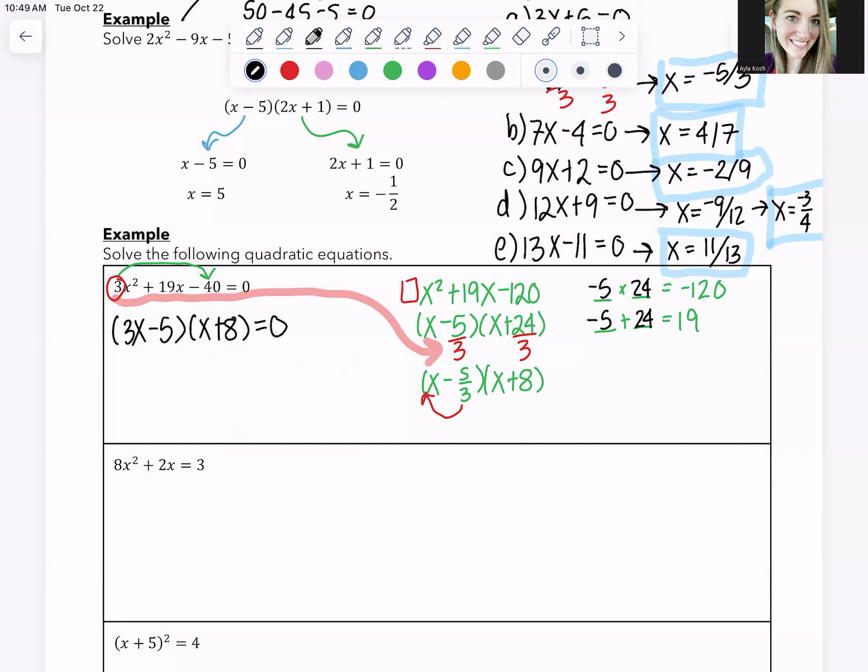So this whole thing factors into 3x minus 5 times x plus 8 equal to 0. We'll take each of the factors. We'll take each of the factors and we'll set them equal to 0. So this becomes 3x minus 5 equals 0. So x is equal to 5 thirds. This guy over here. Maybe I'll use pink on this one. This guy over here. x plus 8 equals 0. x is equal to negative 8. Those are your two answers. You get x equals 5 thirds. x equals negative 8. Okay. Oops. Beautiful.